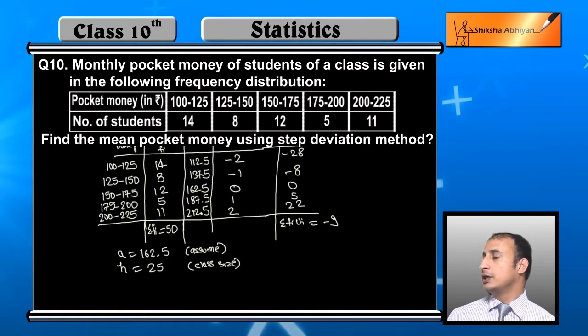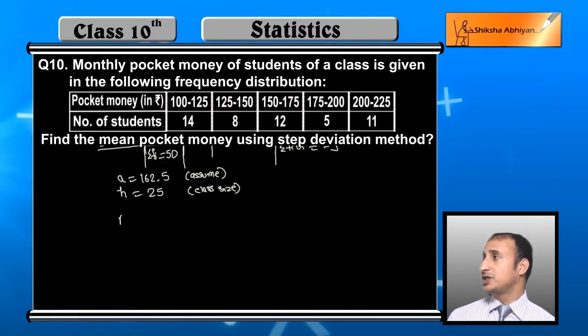Now the mean formula for step deviation is a plus sigma ui fi upon sigma fi into h.